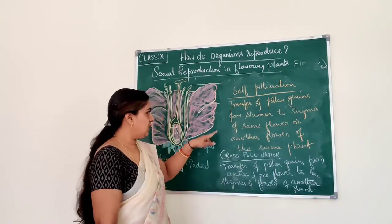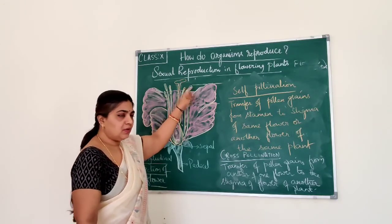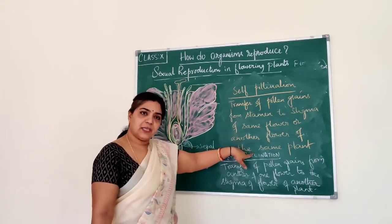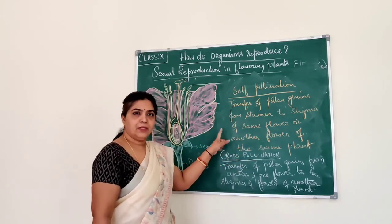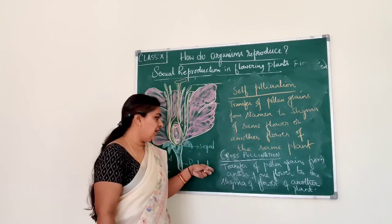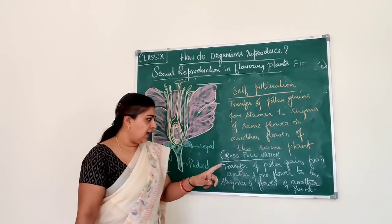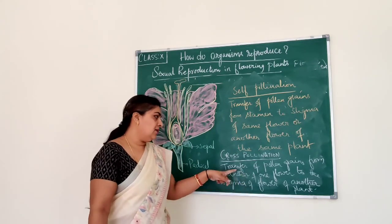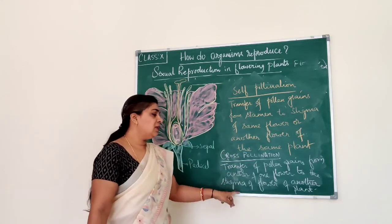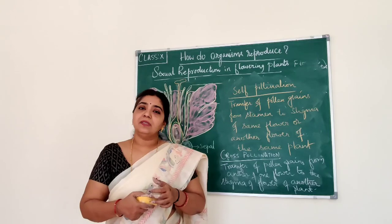The definition of self-pollination: it is the transfer of pollen grains from stamen to stigma of the same flower, or another flower of the same plant. It does not need an external agent — it can happen by gravity. Cross-pollination is the transfer of pollen grains from the anther of one flower to the stigma of a flower of another plant. Next, let us see what happens after pollination.